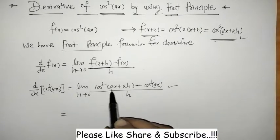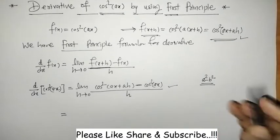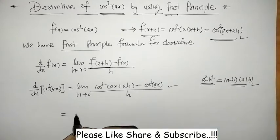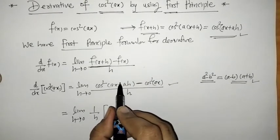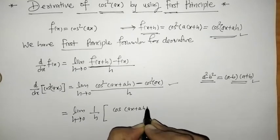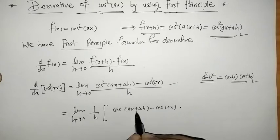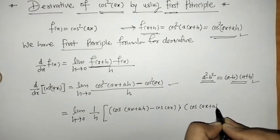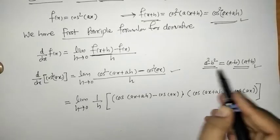We can check that here we have two cos squared terms, so this may be of the form a squared minus b squared. We can write this as (a minus b)(a plus b). By treating cos(ax+ah) as a and cos(ax) as b, we apply this formula. So here we have cos(ax+ah) minus cos(ax), and we have applied this formula here.